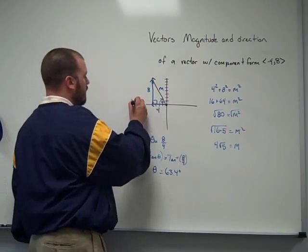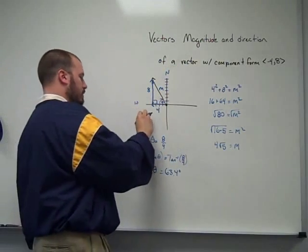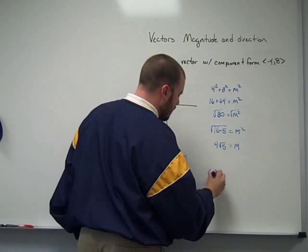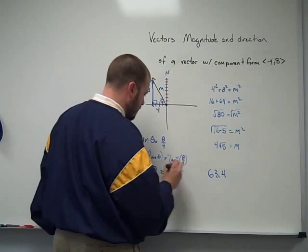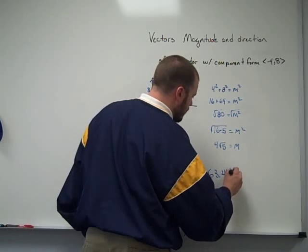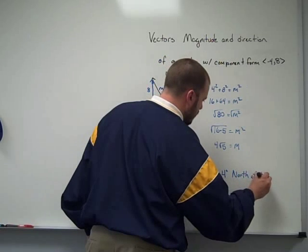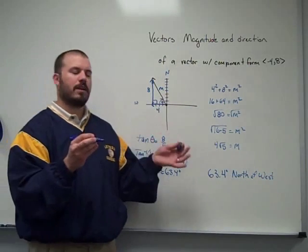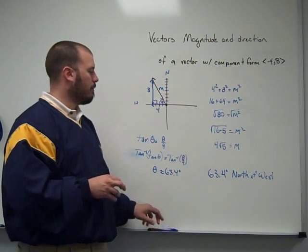63.4 degrees. Now this would be west typically and north typically. So it's 63.4 degrees to the north of west, approximately 63.4 degrees north of west. So this has been finding the magnitude and direction when you only have the component form of the vector.